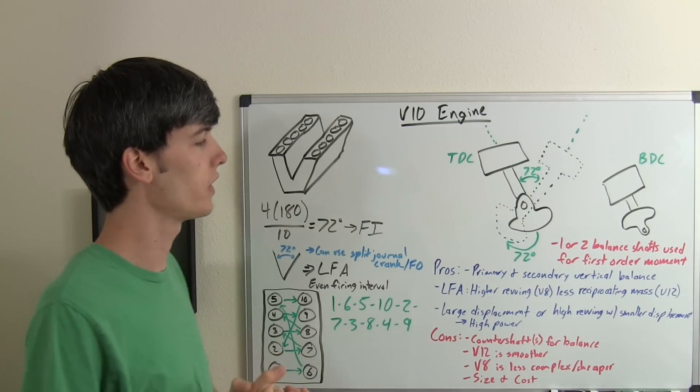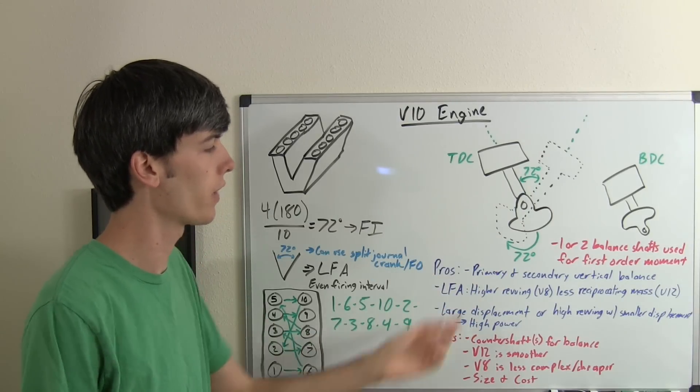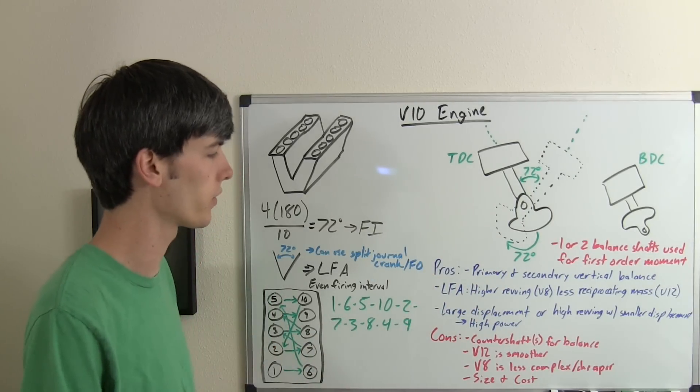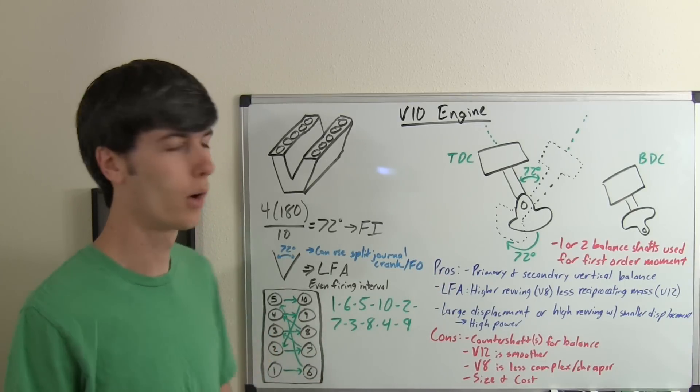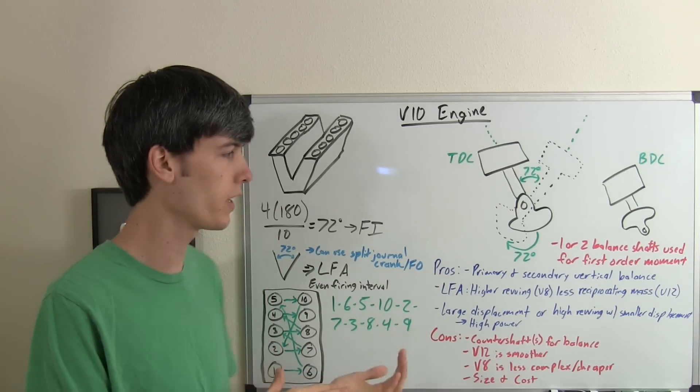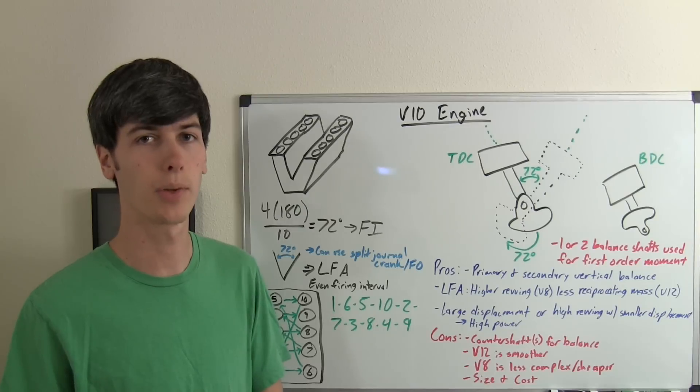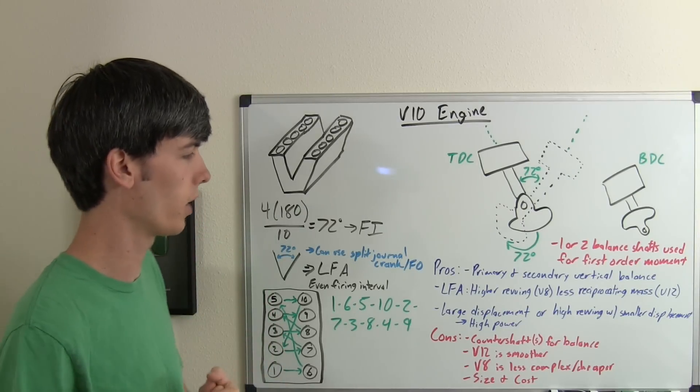So, pros and cons of a V10 engine. Much like the inline 5-cylinder, primary and secondary vertical forces are well balanced. The engineers behind the LFA said the reason they went with a V10 was because they could get it to rev higher than a V8 but it had less reciprocating mass than a V12.